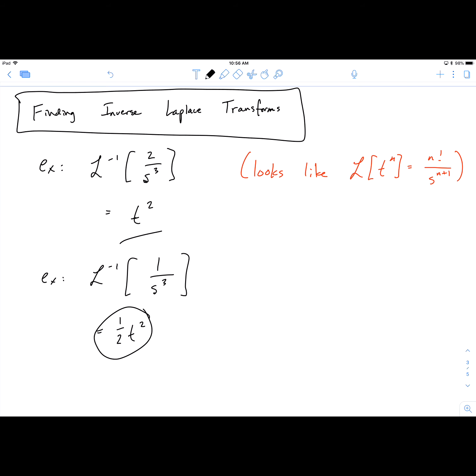So to adjust for that, I need to multiply by a half. So now if I do this, take the Laplace transform of this, you would have 1 half times 2 over s cubed, and it would simplify down to the correct piece.